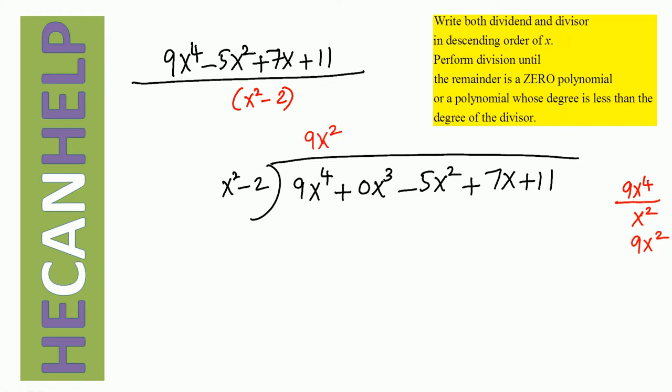What is 9x squared times x squared? 9x to the power of 4. What is 9x squared times negative 2? Negative 18x squared.